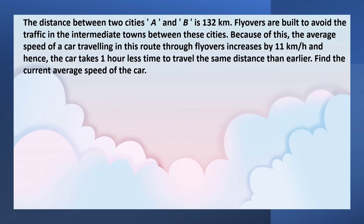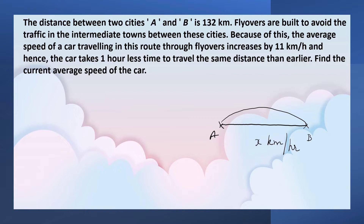Two cities A and B. In the normal route, a car travels at x km per hour. Due to heavy traffic in the intermediate towns, a flyover is built to reach B. Then the average speed of the car increases by 11 km per hour. Now the speed of the car is x plus 11 km per hour. The distance between cities A and B is 132 km.